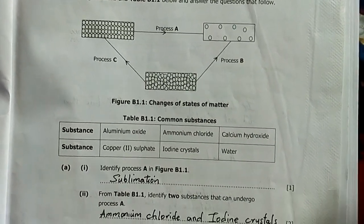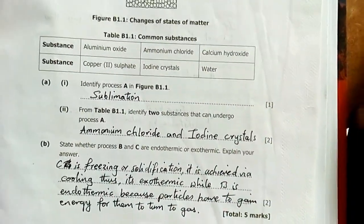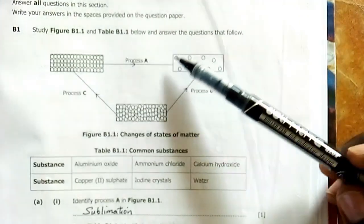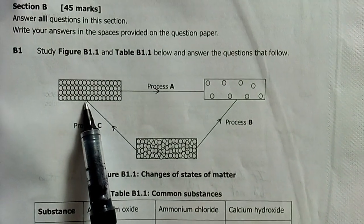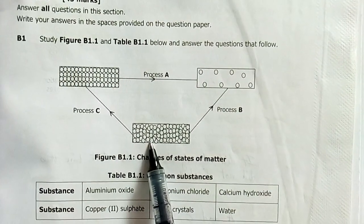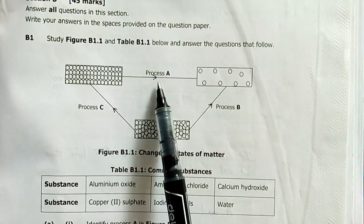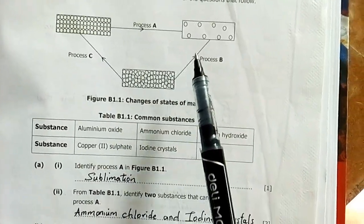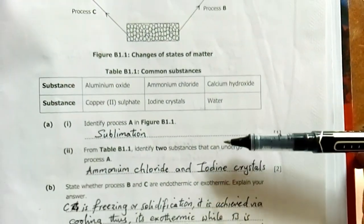Question A: Identify process A in figure B1.1. Looking at the arrangement of particles, this is a solid, this is a gas, this is a liquid. Direct change from solid to gas—that's sublimation. The opposite is desublimation or deposition. My answer is sublimation.